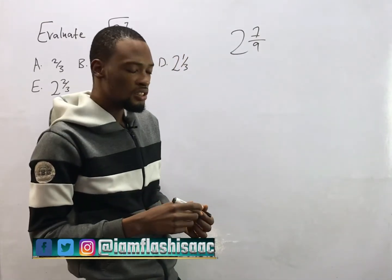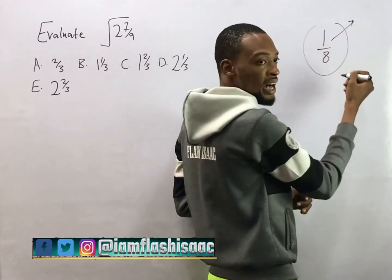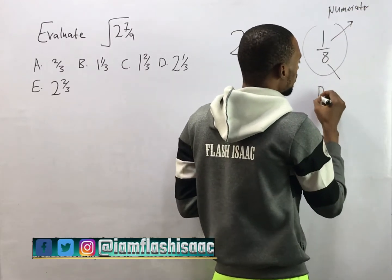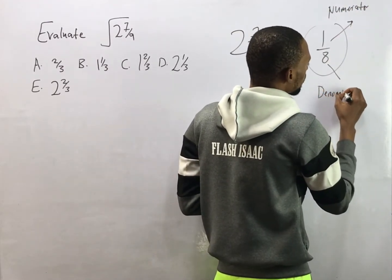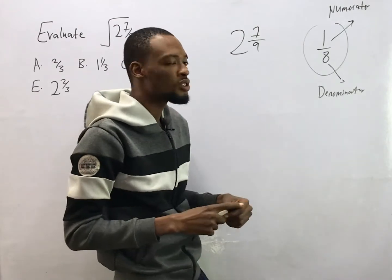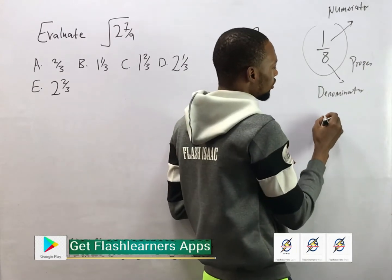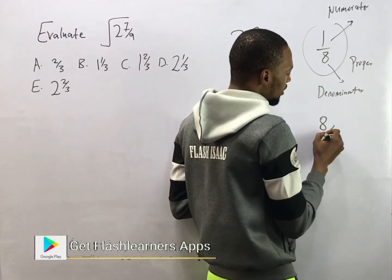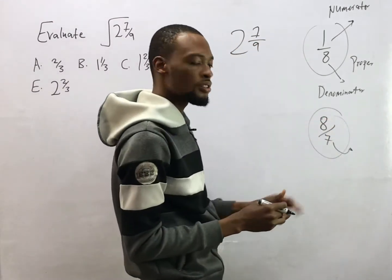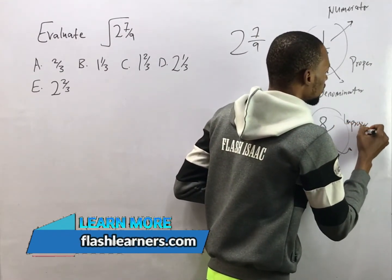A fraction is simply a number that has a numerator and denominator. So when you have something like 1 over 8, the upper part is called the numerator and the lower part is called the denominator. If the numerator is smaller than the denominator it is called a proper fraction. If you have 8 over 7, the denominator is smaller than the numerator, so it is an improper fraction.